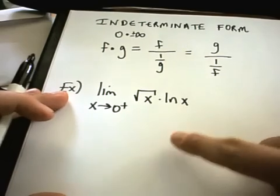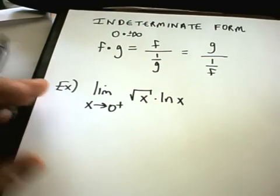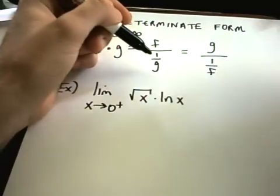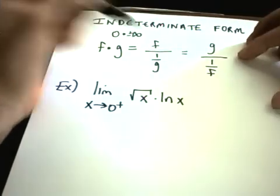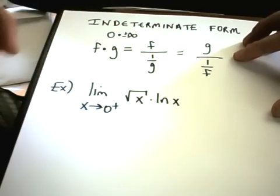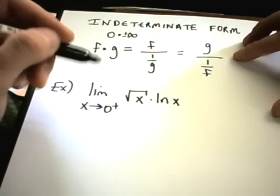There's definitely some problems, like the one I'm about to do, where you may take one over one of the functions and put it in the denominator and find that you're actually getting a more complicated expression. If that happens, just go back and try putting the other one in the denominator.